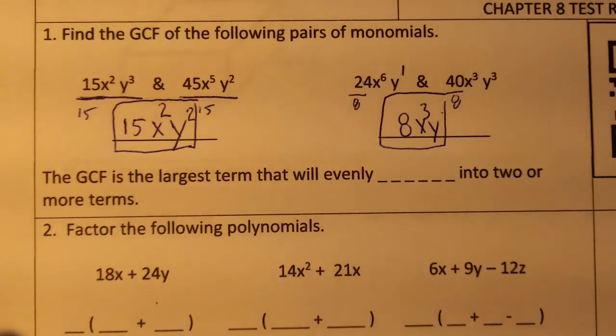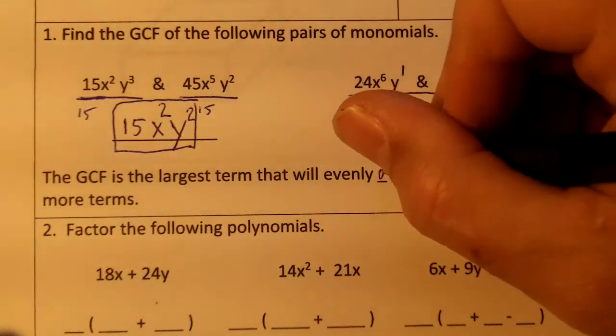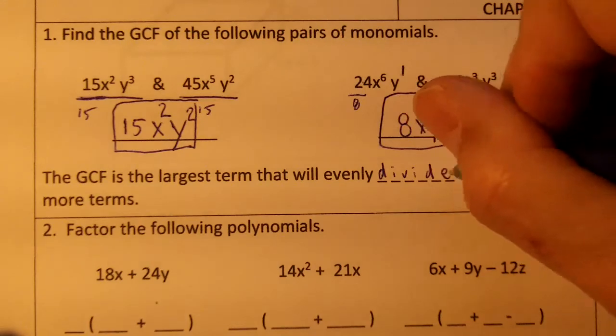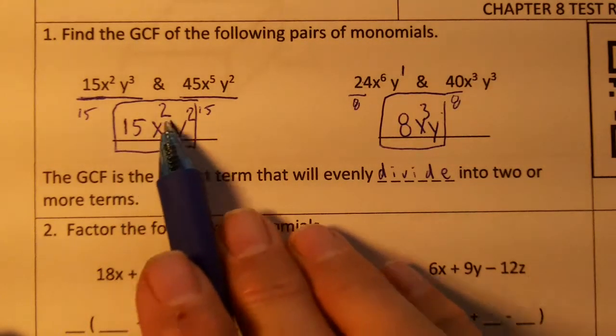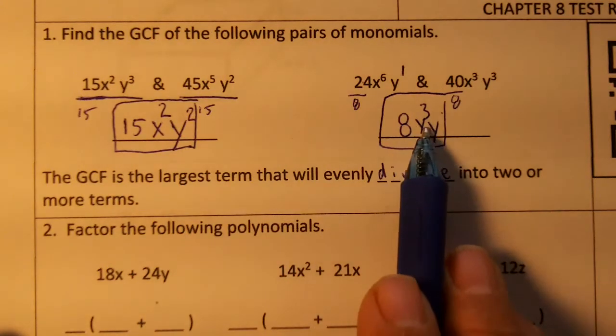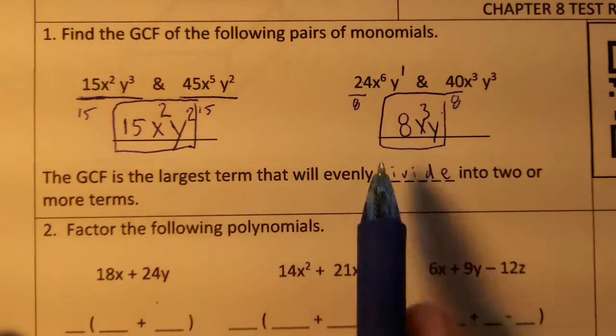The GCF is the largest term that will evenly divide into two or more terms. So 15x squared y squared and 8x to the third y would be the GCFs of those.